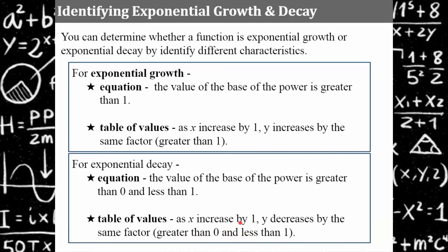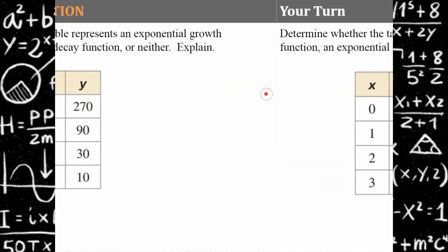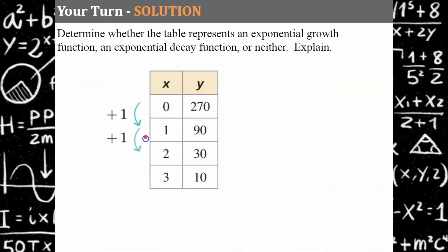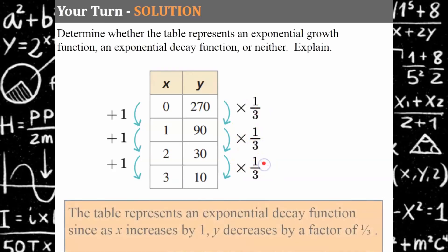Let's see if we can identify these characteristics in a few examples. I'll model this one. We want to determine whether this table represents an exponential growth function, exponential decay function, or neither. First, x is increasing by 1 and the y values are decreasing by a factor of one-third. 270 times one-third is 90; 90 times one-third is 30; 30 times one-third is 10. Because this is decreasing by a constant factor of one-third, this table represents an exponential decay function.